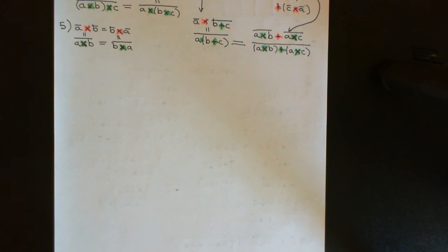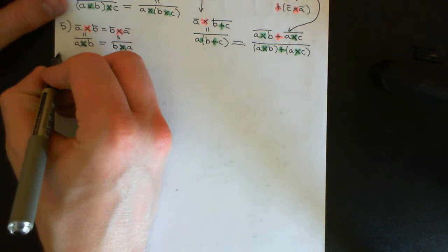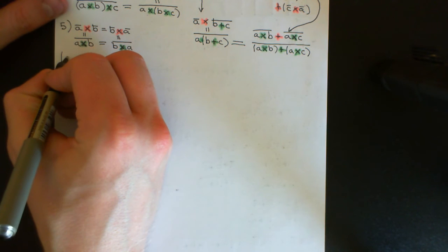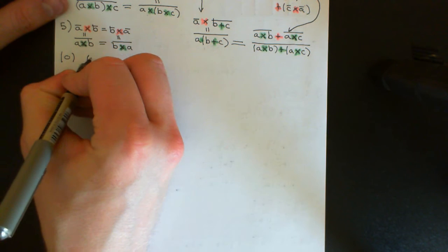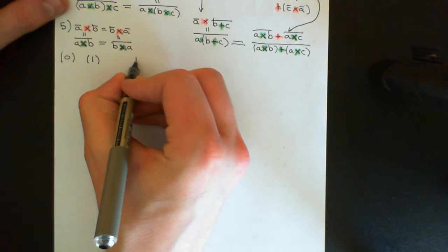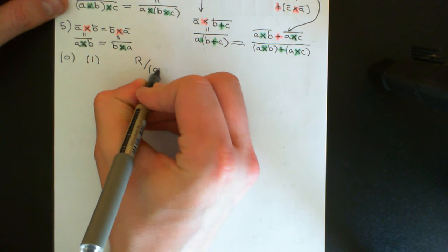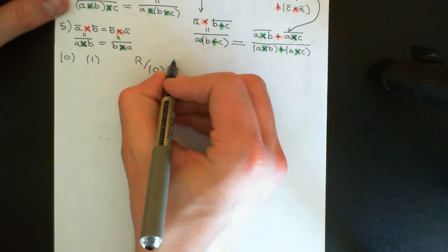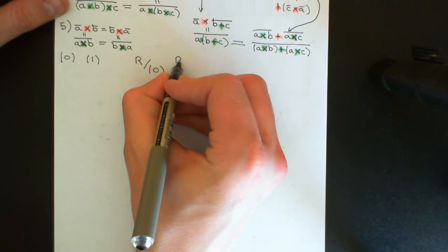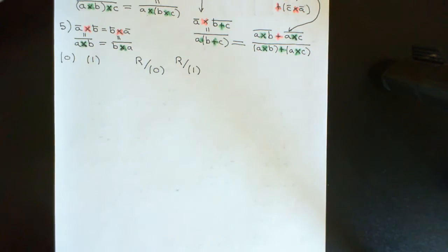The two ideals that we're going to use to form these quotient rings are the zero ideal and the unit ideal. So we're going to look at, for an arbitrary commutative ring R, what happens if you quotient out by the zero ideal and what happens if you quotient out by the unit ideal.